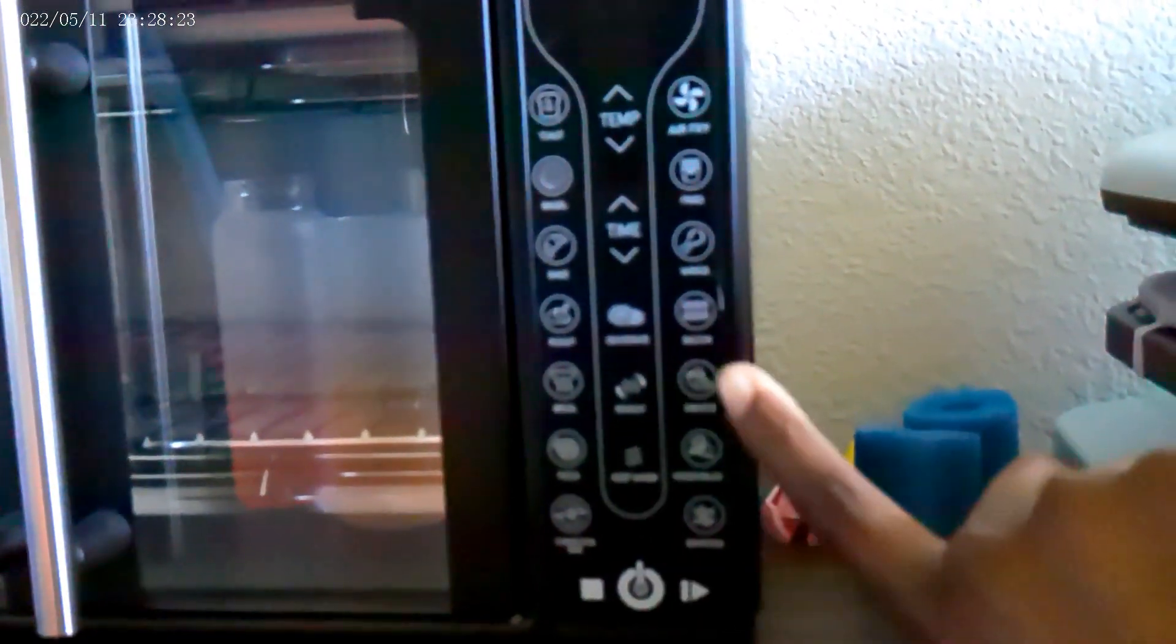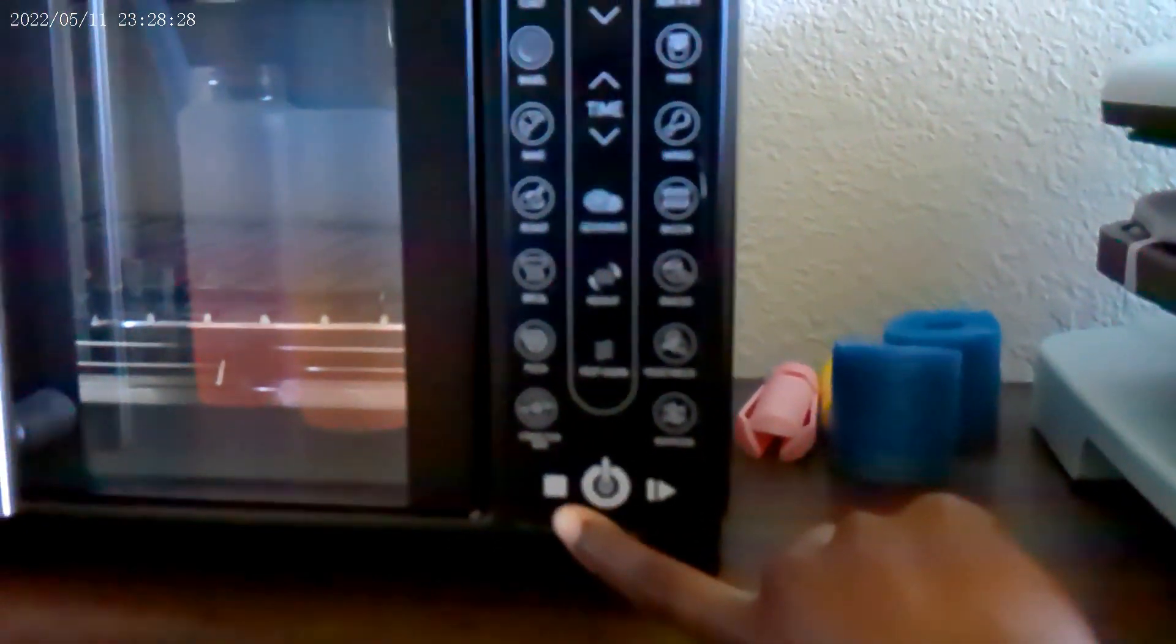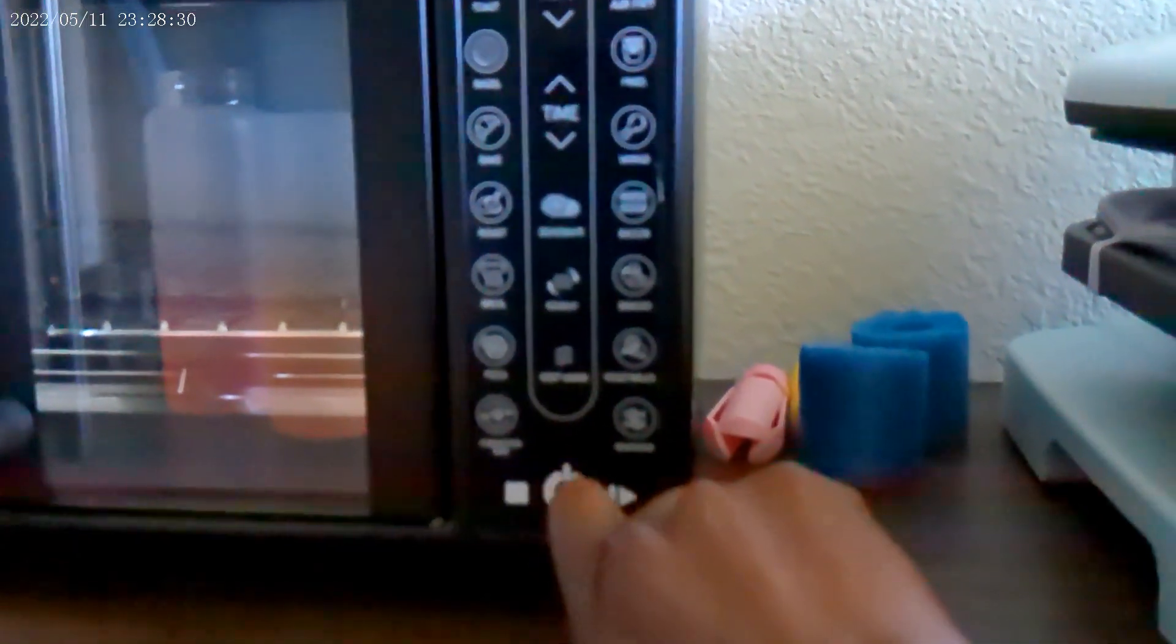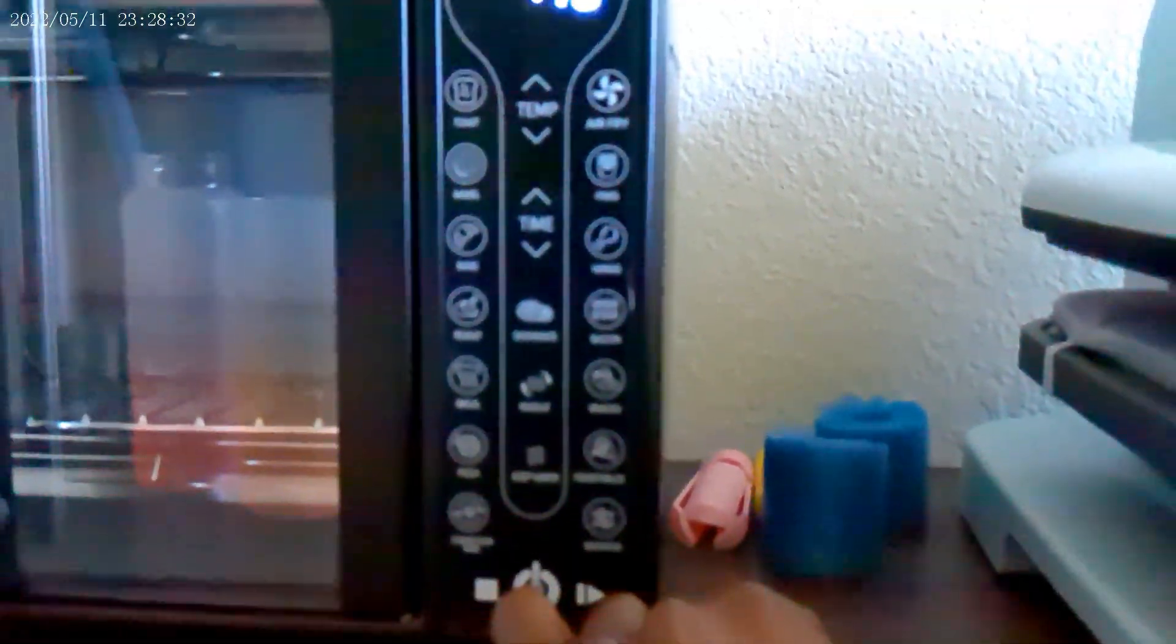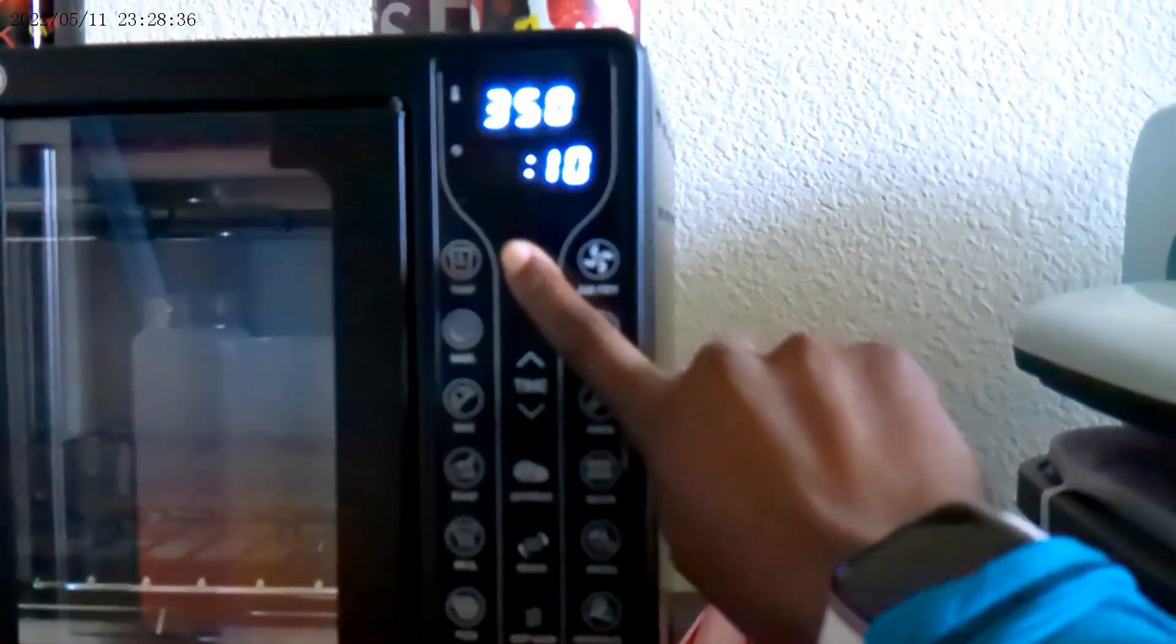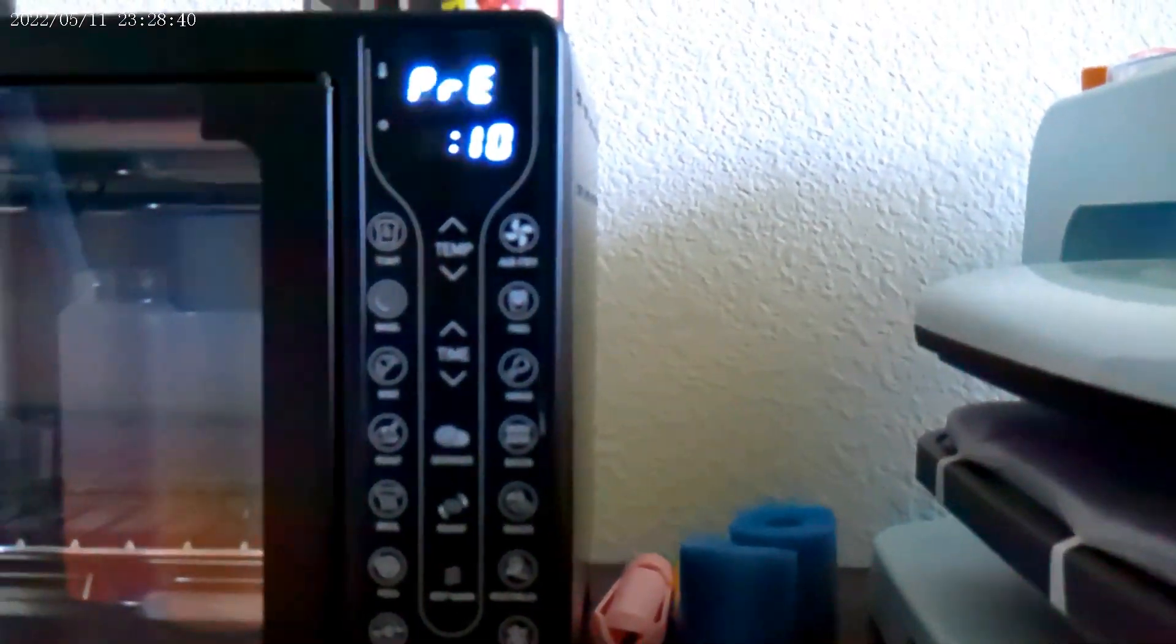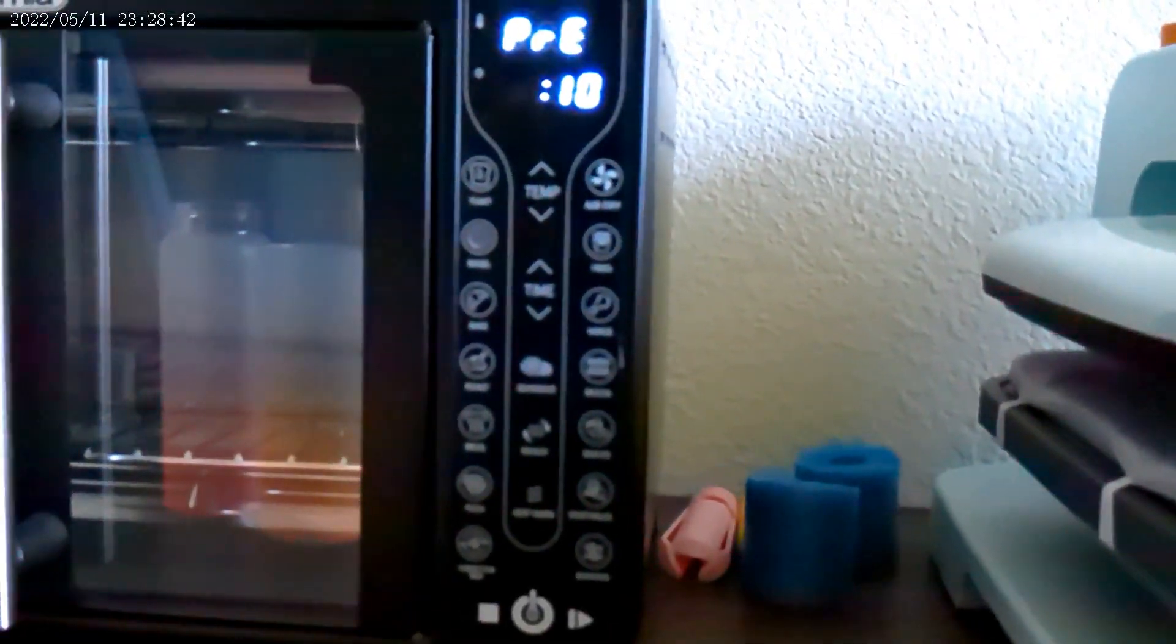So what you want to do is turn your convection oven on. I put mine on convection oven, and then I put this to 360 and I have it start so that I can prep everything before I begin.